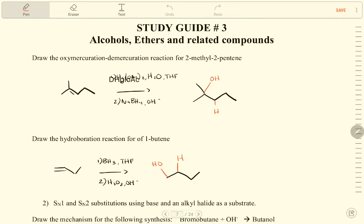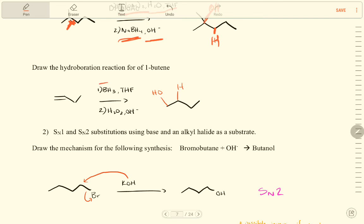Now draw the oxymercuration-demercuration reaction for 2-methyl-2-pentene. There is a double bond; in the presence of Hg(OAc)2/H2O/THF then NaBH4/NaOH, OH adds on top and H is added below — we form the trans product. For hydroboration, we use BH3/THF then H2O2/NaOH. OH and H add in the same direction — the double bond breaks and both add syn. Remember these two reactions as the main ways to prepare alcohol from alkenes.